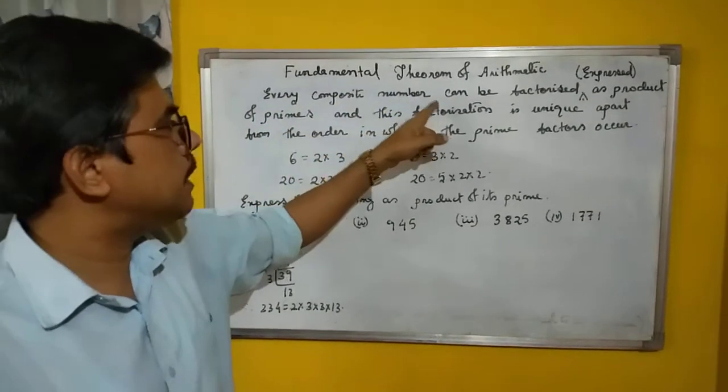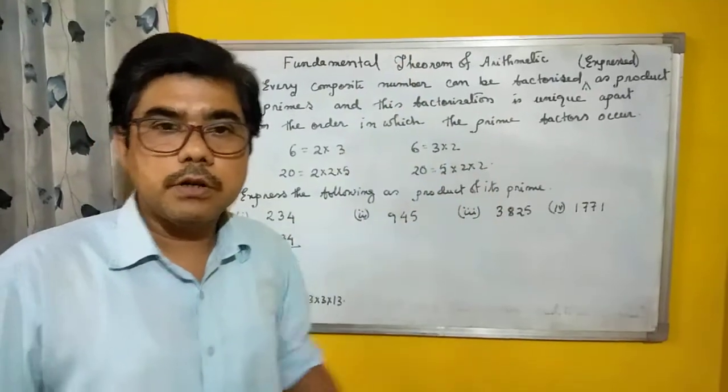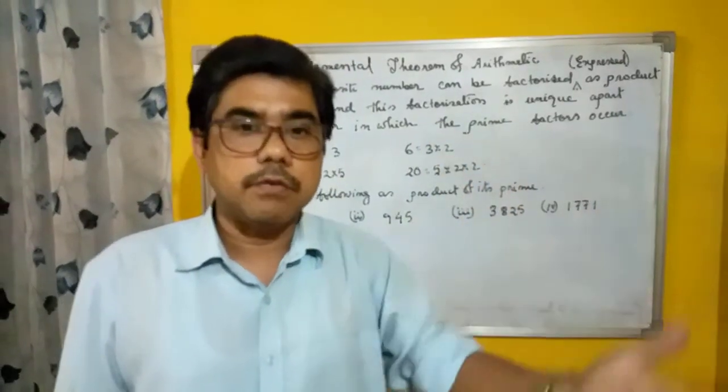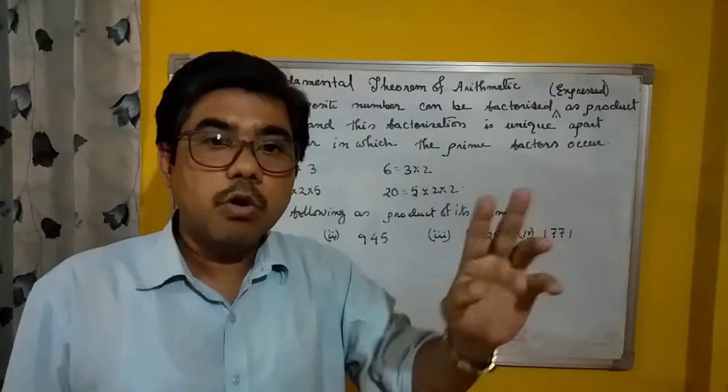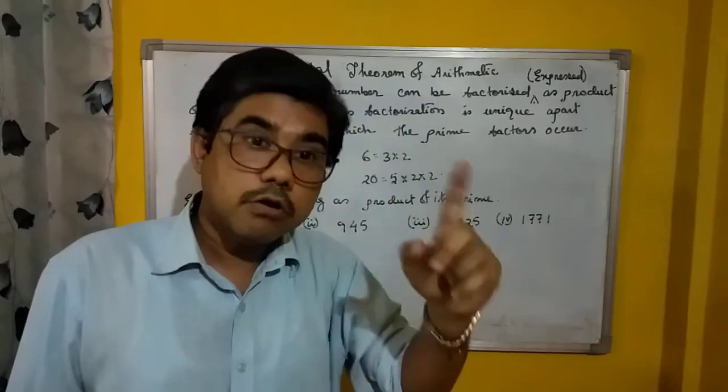Every composite number... you know prime and composite numbers. Prime numbers have only two factors: one and itself. Composite numbers are those which have more than two factors - one, itself, and other divisors. That is a composite number.